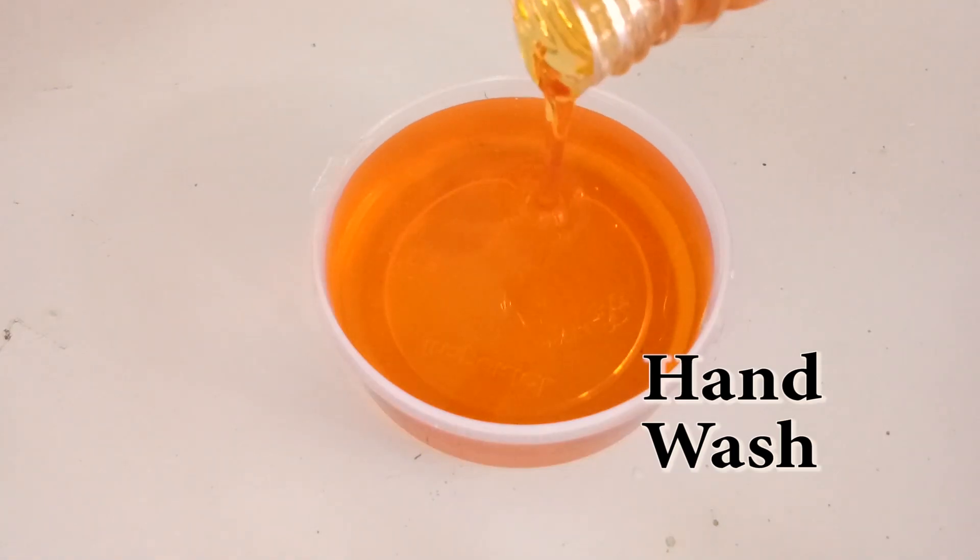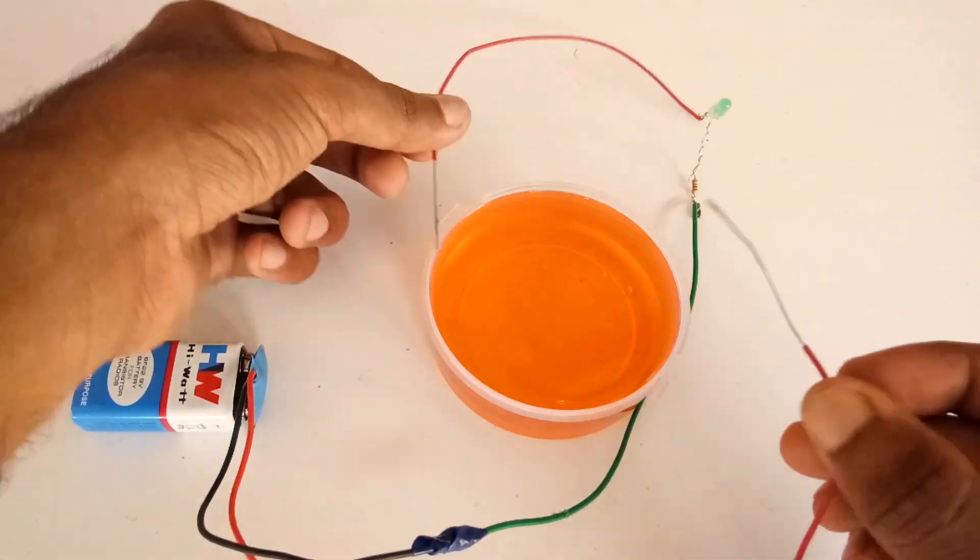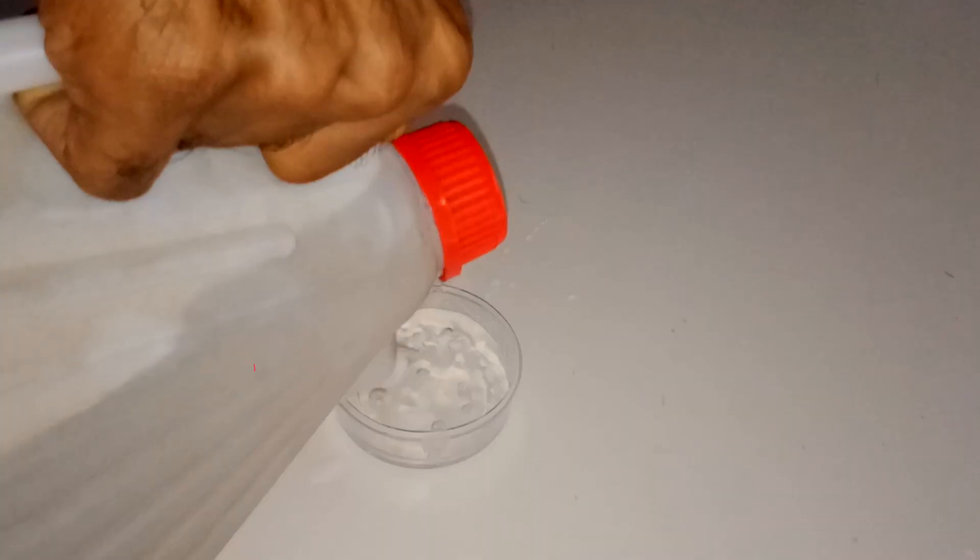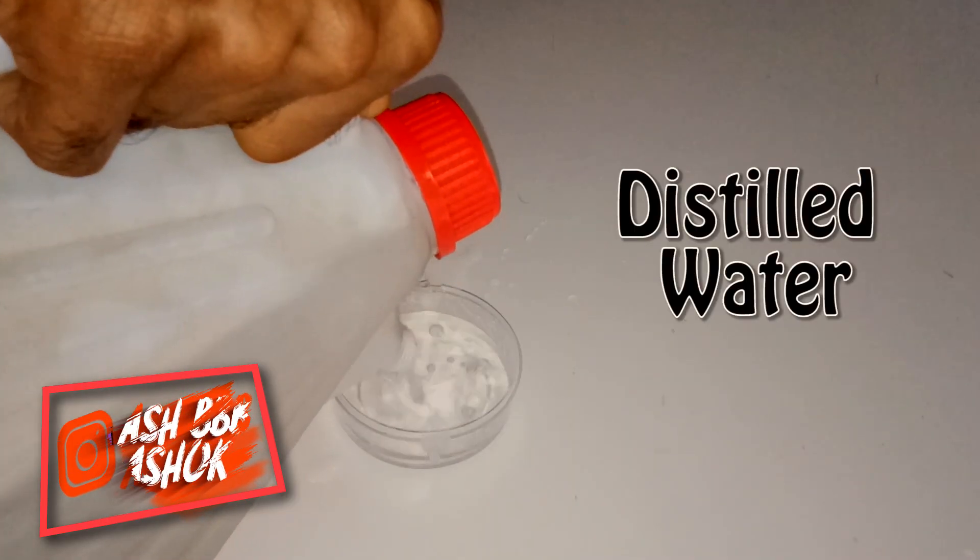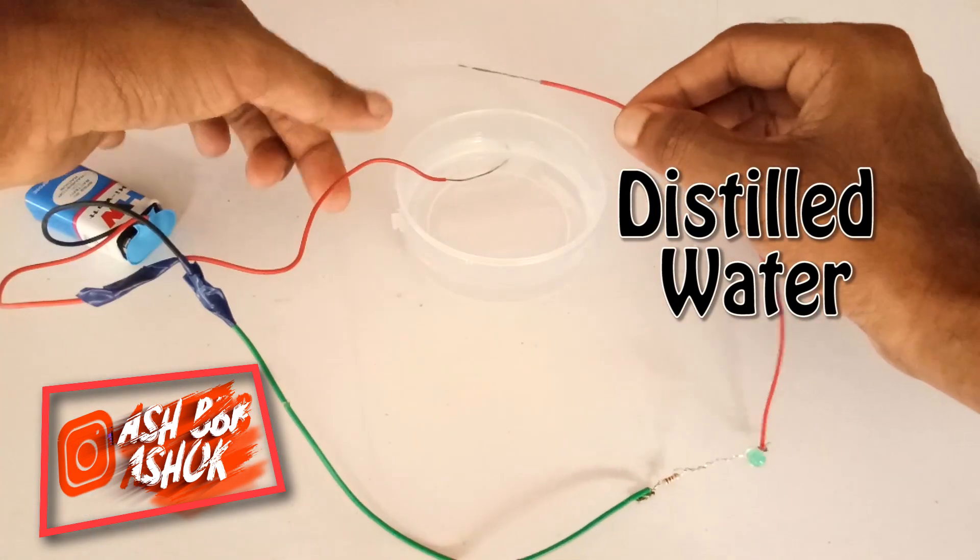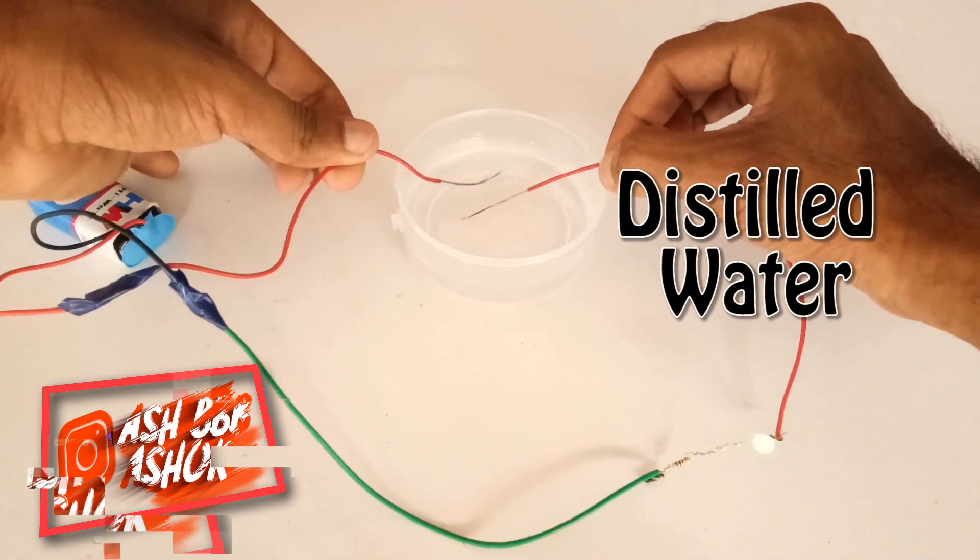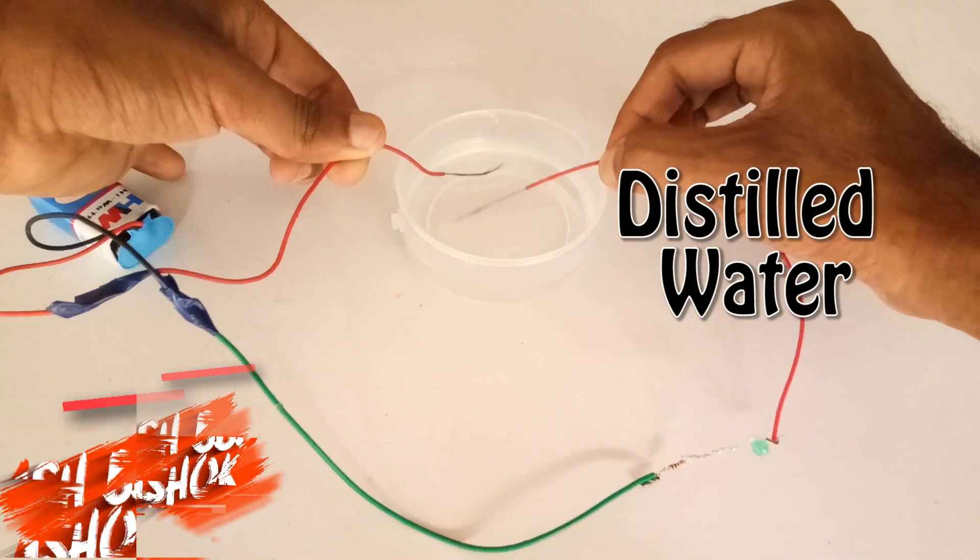First, I poured some liquid hand wash and it was well conducting. Then the second one is distilled water. Distilled water only contains hydrogen and oxygen. Actually it conducts a little bit, but it glows more when